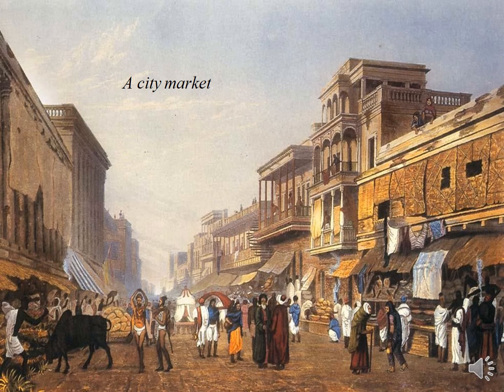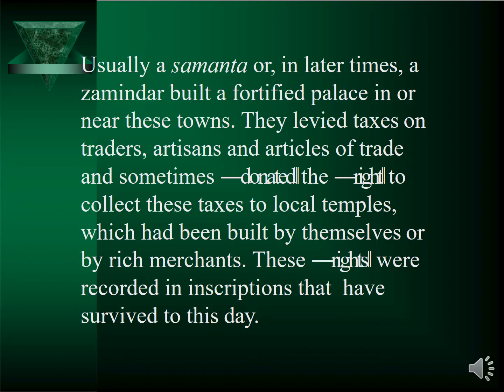This is a scene of a city market, which is in your book. A samantah, or in later times called a zamindar, built a fortified palace near the towns. He levied taxes on the traders, artisans, and articles of trade, and sometimes donated the right to collect taxes to local temples, which were built by rich people or merchants.